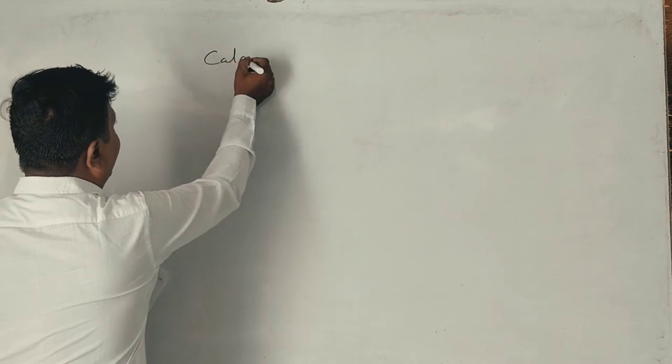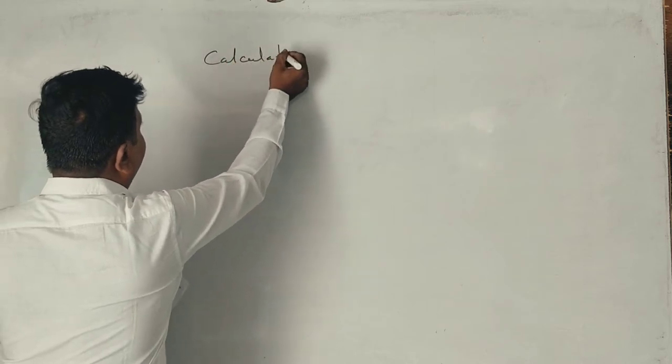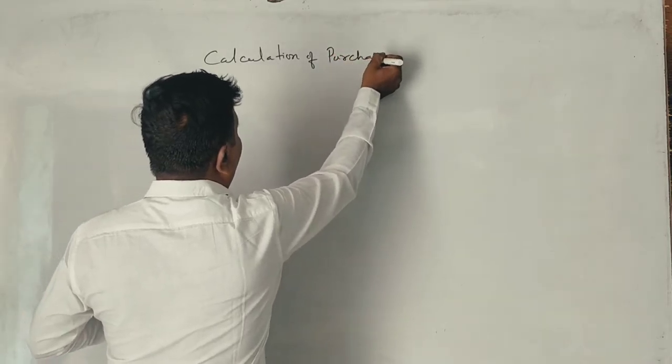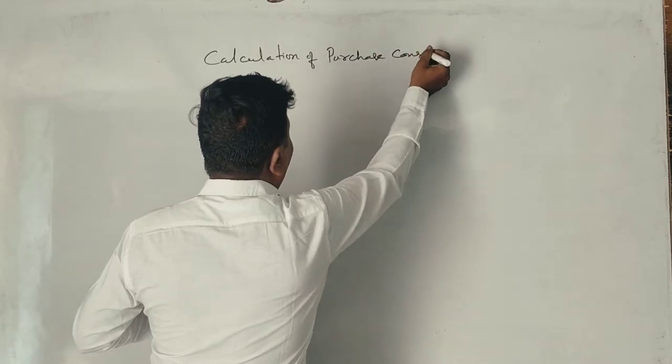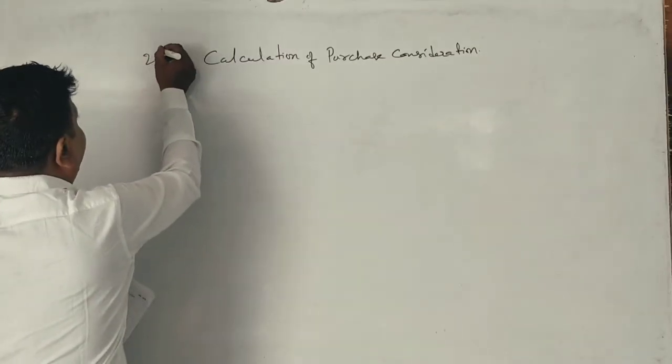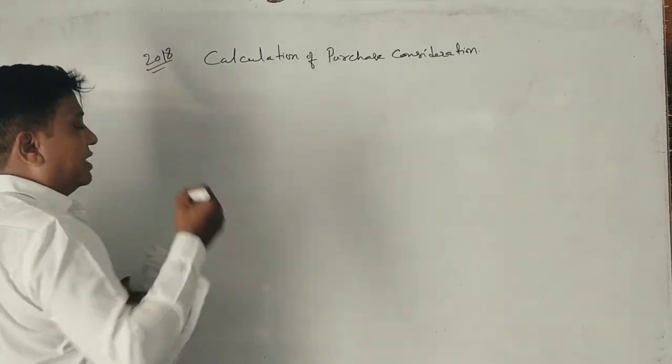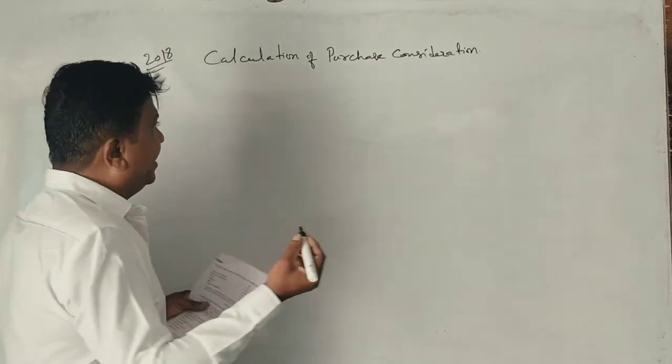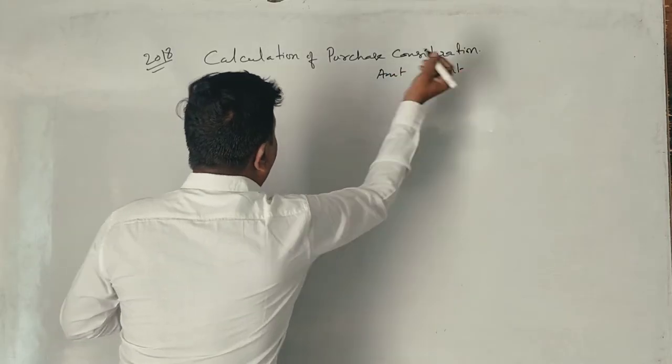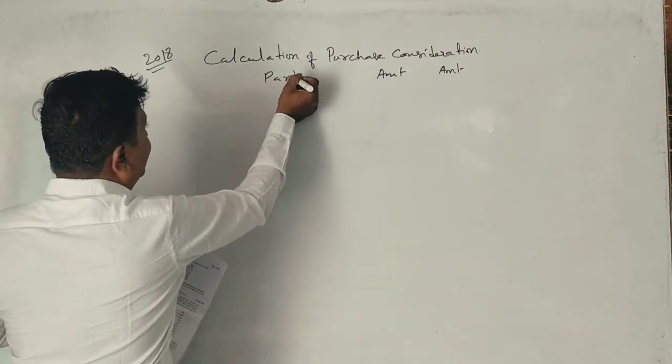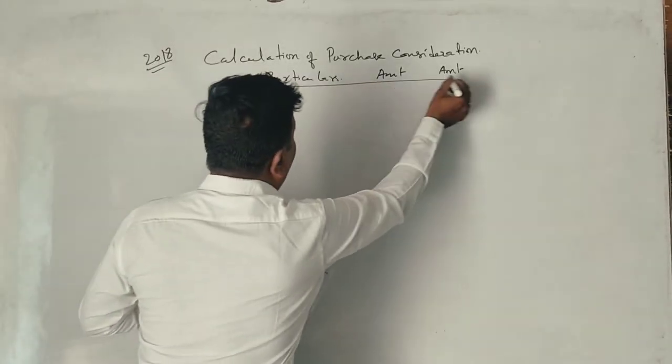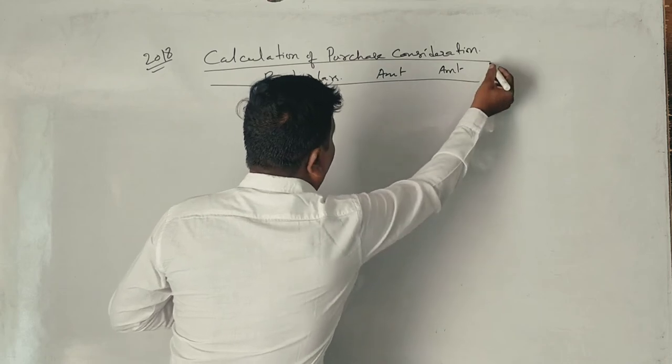Now, what is the calculation of purchase consideration? This is a 2018 question paper, six marks or eight marks. First, what is the amount? This is the amount column. This is the particulars column.